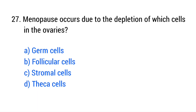Question number 27. Menopause occurs due to the depletion of which cells in the ovaries? The right answer is option B, follicular cells.